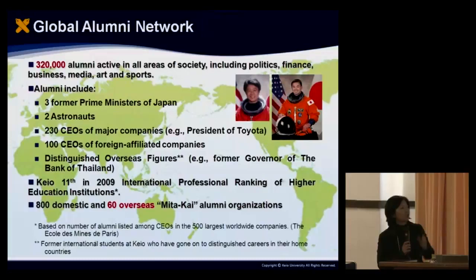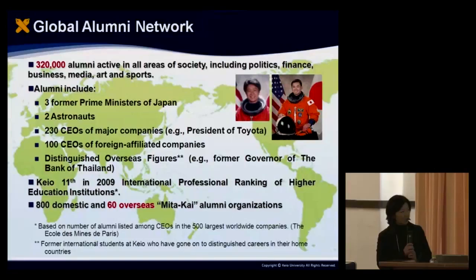One of our strengths is Mitakai, which is the name in Japanese for alumni organisations. We have more than 800 domestic alumni associations and also 60 overseas associations, which is rather unusual for Japanese universities. They are very active in some big cities like New York and London.